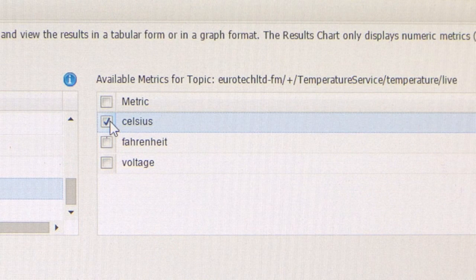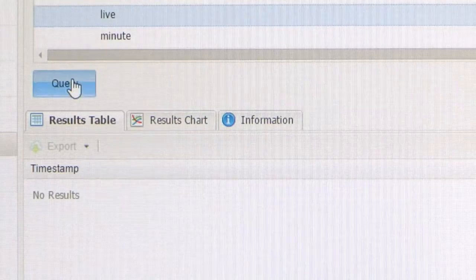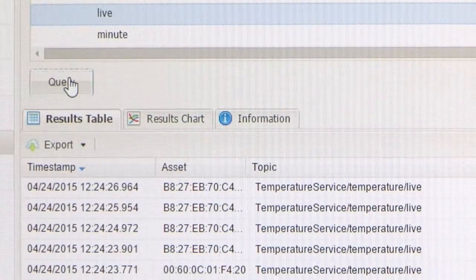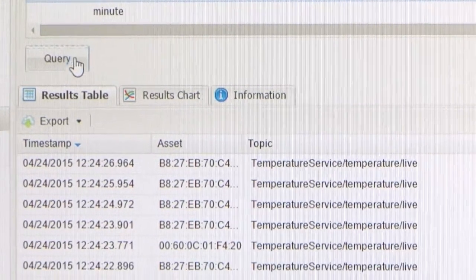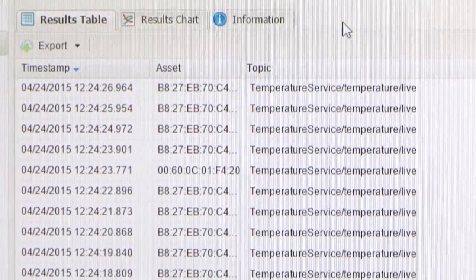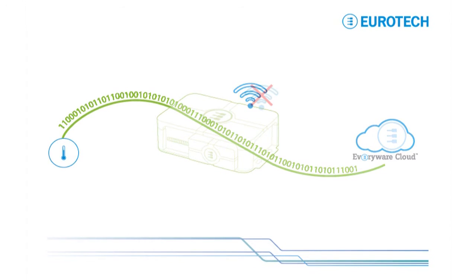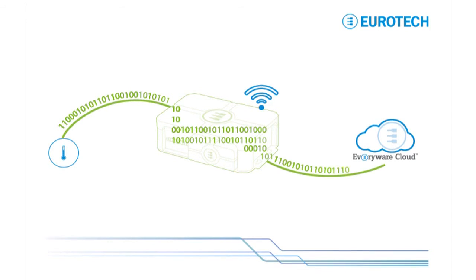Everywhere cloud lets you quickly look at the data published from your gateway device. Everywhere software framework even saves data which can't be sent if the connection to the cloud is lost. This queued data will then be sent once the connection is re-established.